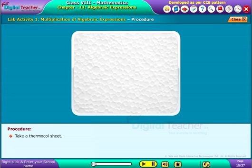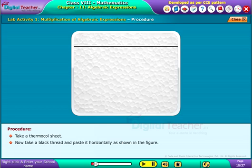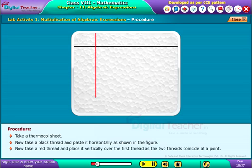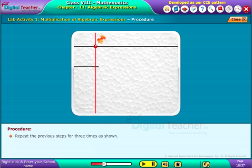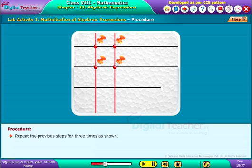Take a thermocol sheet. Now take a black thread and paste it horizontally as shown in the figure. Now take a red thread and place it vertically over the first thread as the two threads coincide at a point. Place the pushpin at the intersecting point. Repeat the previous steps for three times as shown.